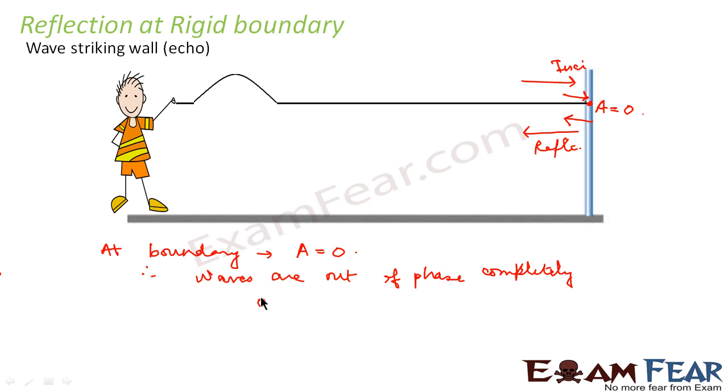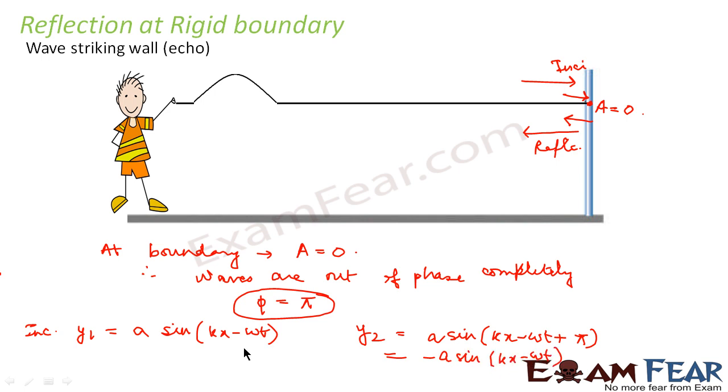Therefore, phi is equal to pi. This denotes two waves are completely out of phase. Therefore, we say that if y1, that is for incident wave, is equal to A sine kx minus omega t, then y2, that is the reflected wave will be equal to A sine kx minus omega t plus pi. So by trigonometric relations, you can write it as minus A sine kx minus omega t. So you can say y, that is superposition y1 plus y2 will give you zero.